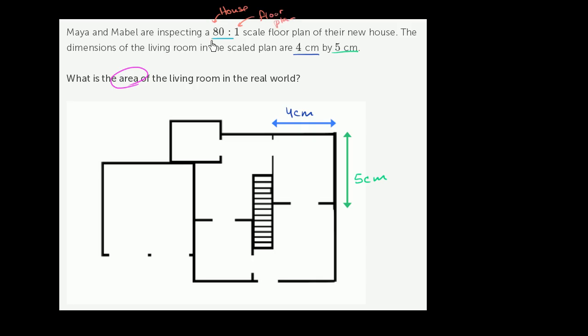If we had 80 meters in the house, that would be represented as one meter on the floor plan. If we had 80 centimeters in the house, that would be represented by one centimeter in the floor plan. It goes the other way around. One centimeter on the floor plan would represent 80 centimeters in the house. It's always important to do a reality check that the house should be bigger than the floor plan.